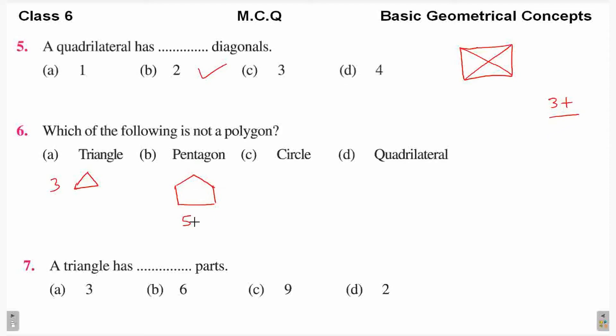Pentagon is also a polygon. Although circle is a closed figure, it is not made up of line segments. So therefore, circle is not a polygon. Quadrilateral is again a closed figure made up of line segments. So this is also a polygon.